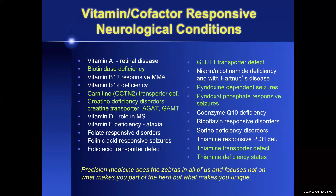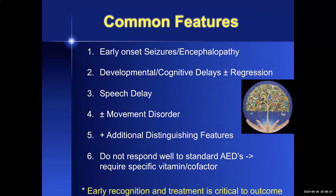This slide summarizes a number of vitamin-responsive conditions. I will highlight the features of seven groups of these disorders. Though they may be relatively rare zebras, they have given us unique windows into the pathophysiology of metabolic and neurophysiologic pathways and have laid the groundwork for precision medicine. The common features include early-onset seizures with encephalopathy, developmental delay, speech delay, and a possible movement disorder. Early recognition and treatment is critical, as these children do not respond well to standard antiepileptic therapies.